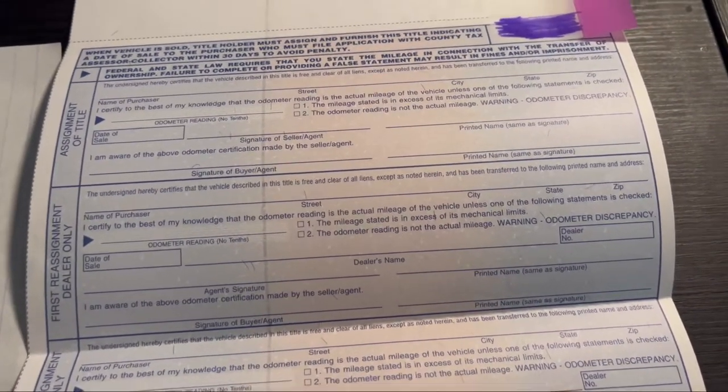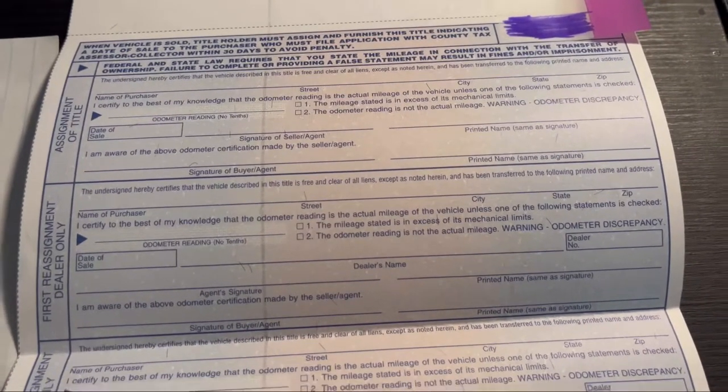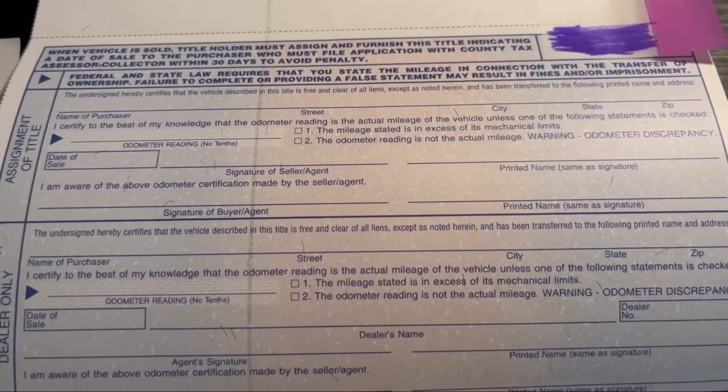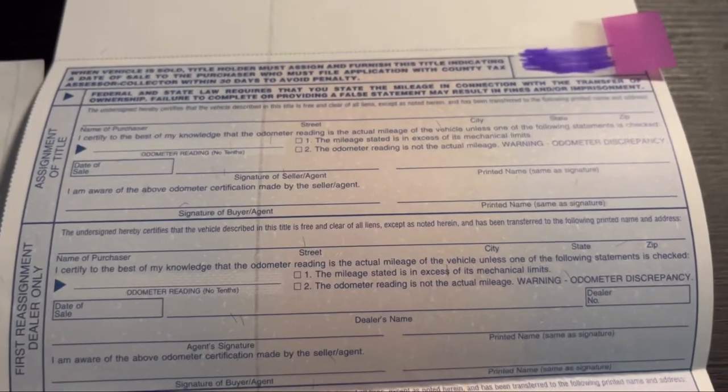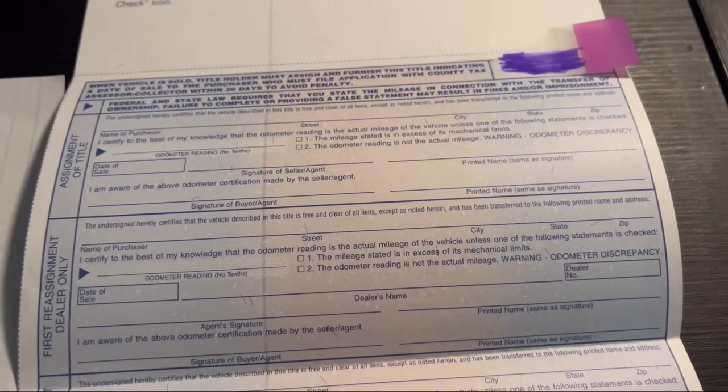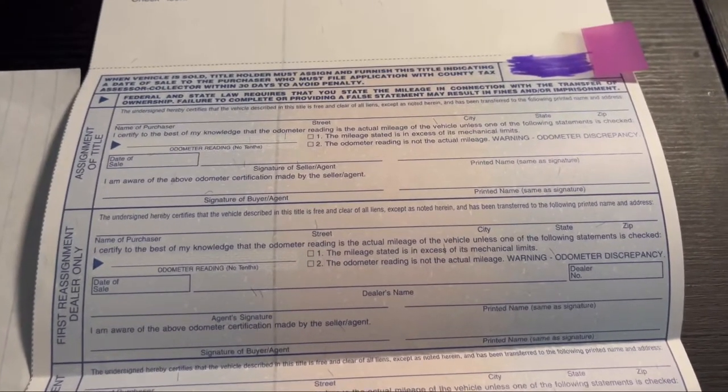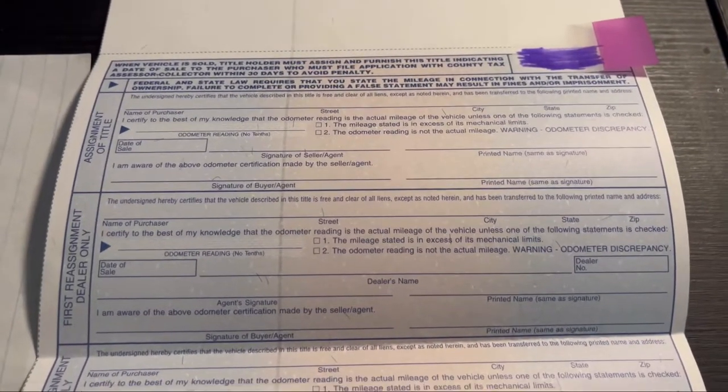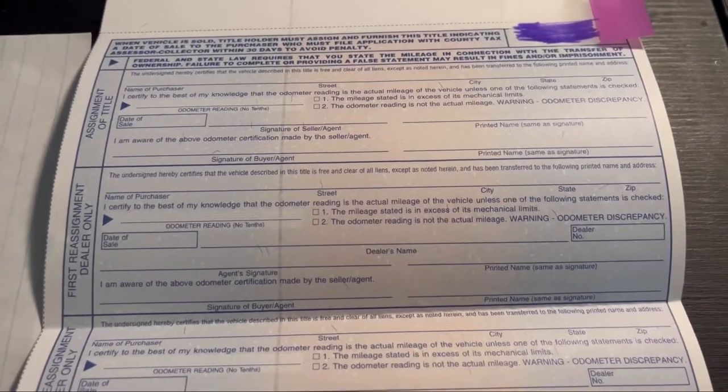So, when you are the buyer of a private party car, if that signature right there does not match the name of the owner on the front of the title, then you will not be able to register it at the tax office when you go to do it. They will not let you because it's been title jumped on. The signatures are going to have to match.